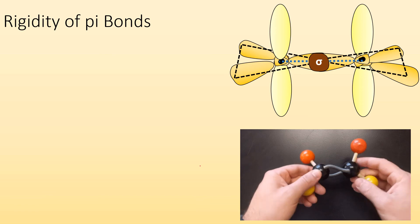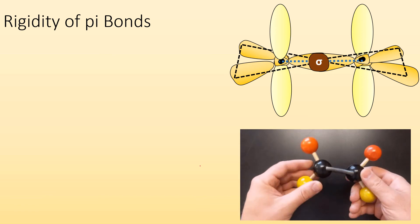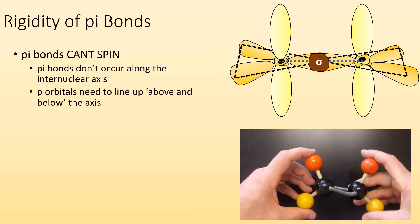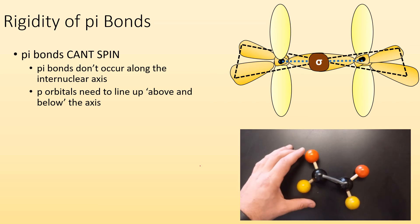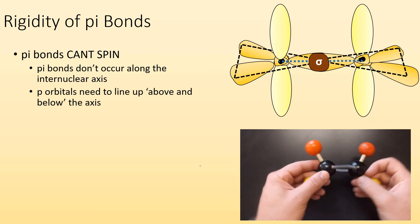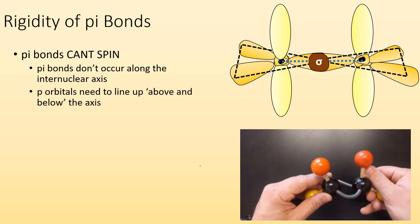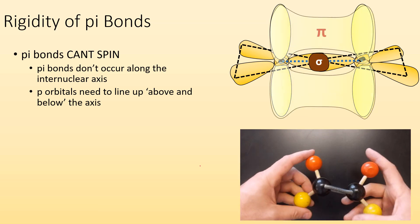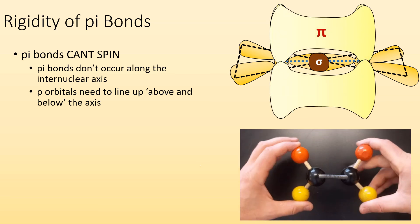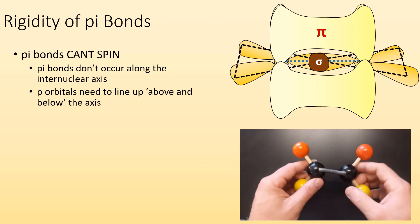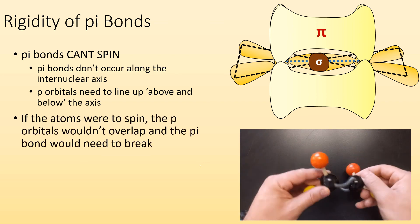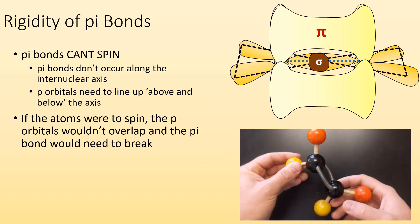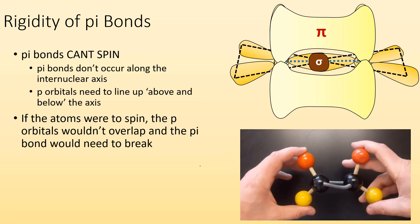So rigidity of pi bonds. We said sigma bonds can spin, but pi bonds can't. Pi bonds don't occur along the internuclear axis — they have to line up above and below that axis. So if we were to try to spin the atoms along that bond, we'd have to break that overlap. So in atoms that have pi bonding, it tends to be more rigid.